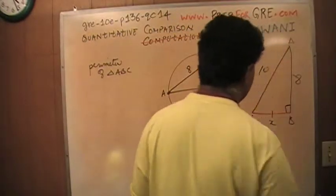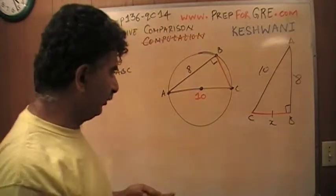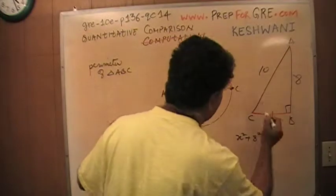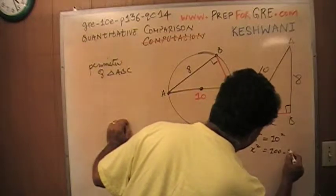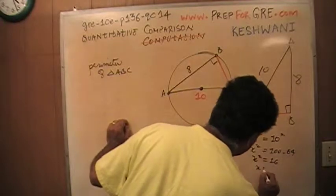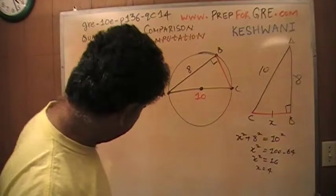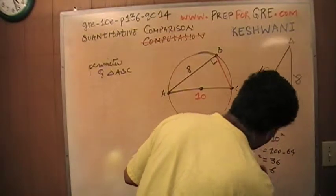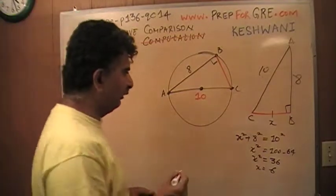There are a couple of ways to solve this. One is through the Pythagorean theorem: the square of one side plus the square of another side equals the square of the hypotenuse. Therefore, x² equals 100 minus 64. That gives us x² = 36, and x equals 6. As soon as I wrote 4, I realized that didn't make sense — it should be 36, so x equals 6.